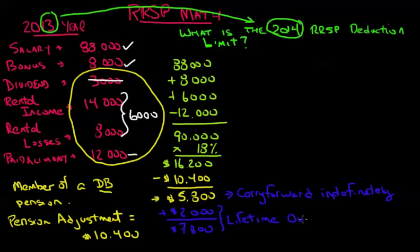However, we do have the lifetime over-contribution allowance. And what the lifetime over-contribution allowance allows us to do for RRSP contributors over the age of 18 is to put an extra $2,000 into their RRSP. That's not tax deductible. However, it doesn't create any penalties either. Now, you can't do that every year. You can only do that really once. And then that lifetime over-contribution allowance is gone.